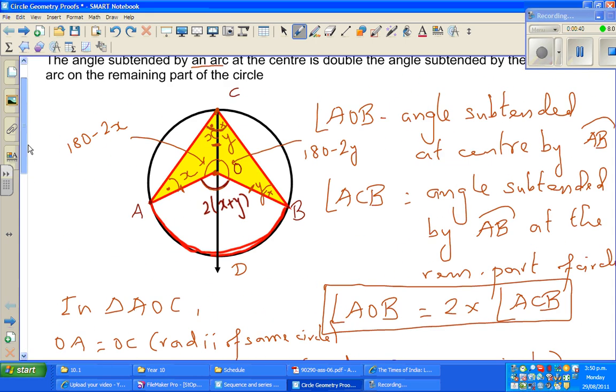Now this angle AOB is called the angle subtended by arc AB at the center, and this angle ACB is called the angle subtended by the same arc at the remaining part of the circle. This angle is twice that angle.